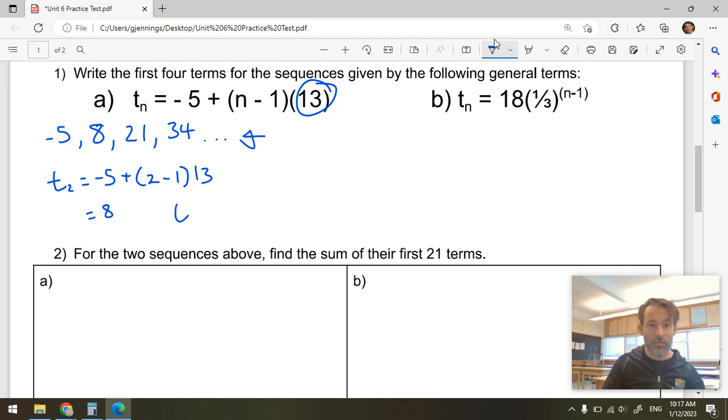Okay? You can just do it this way if you recognize that it's arithmetic. If you're not sure, yeah, go ahead and substitute in. T4 is equal to negative 5 plus 4 minus 1 times 13. 4 minus 1 happens to be 3. 3 times 13 happens to be 39. 39 minus 5 happens to be 34. So we get the same thing, one method or the other method.